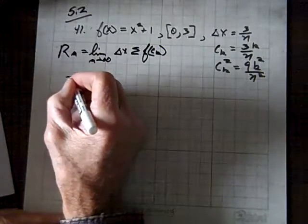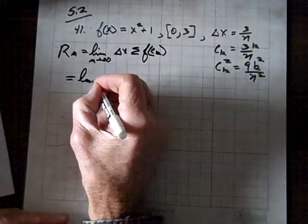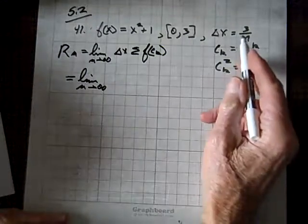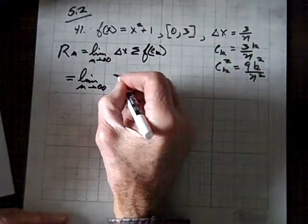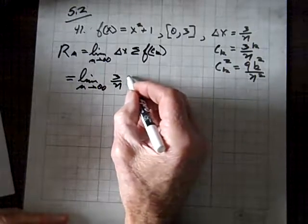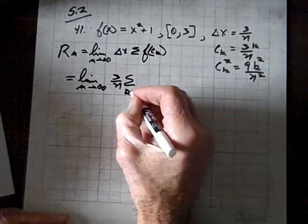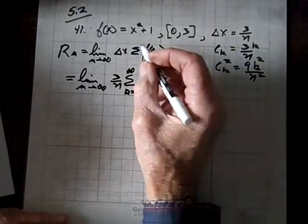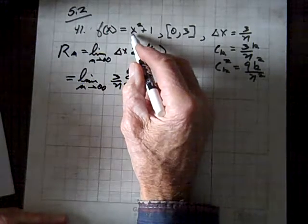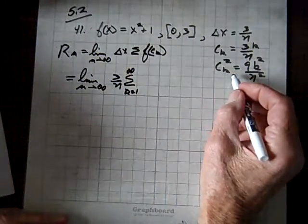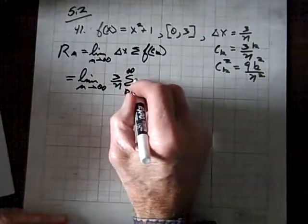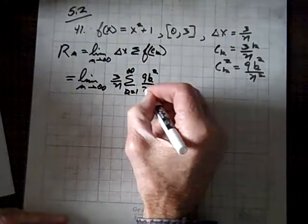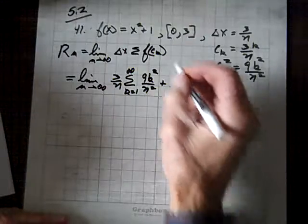So now we've got, let's install our pieces, and that is, n goes to infinity, and we'll put our delta x which is 3 over n, and now our summation as k equals 1 to infinity, and that's going to be, now in place of x, we're going to put c sub k, and we're going to square it, so we've already got that squared out, and we'll have 9 k squared over n squared plus 1.